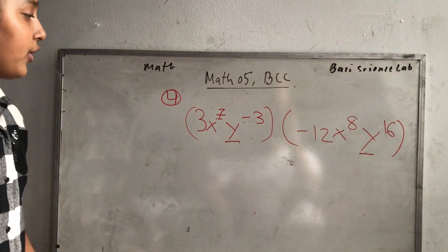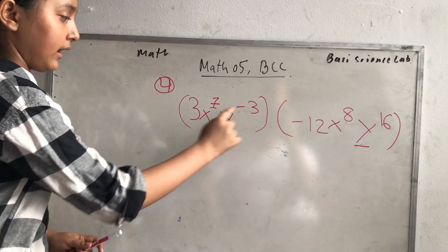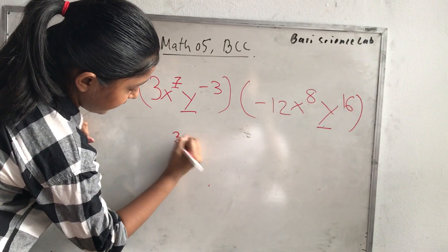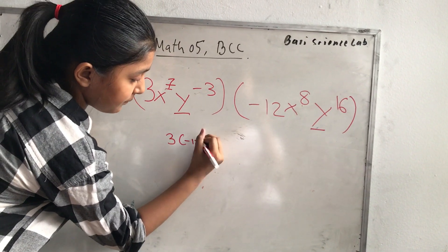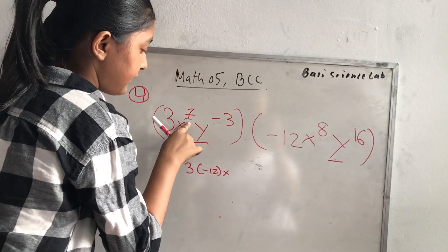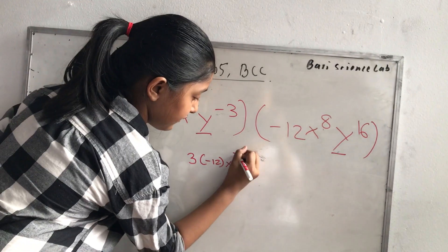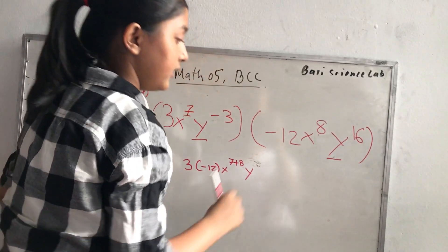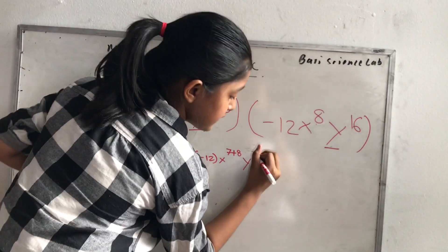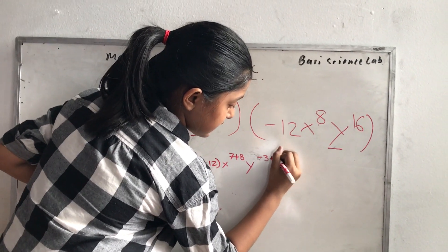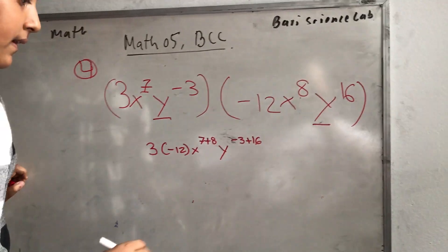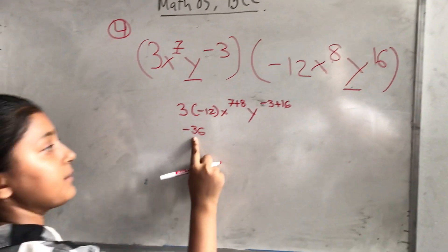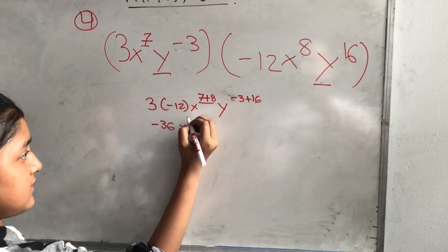Right now I'm going to show you number 4 in math. So here is 3x. First you have to do 3 parentheses minus 12. Then you have to bring down the x. Then you have to do 7 plus 8, then bring down the y. And then you have to do minus 3 and 16 — minus 3 first, and then plus 16. Then you have to do minus 36, because 12 times 3 is 36. Bring down the x. 7 plus 8 is 15. Then bring down the y.